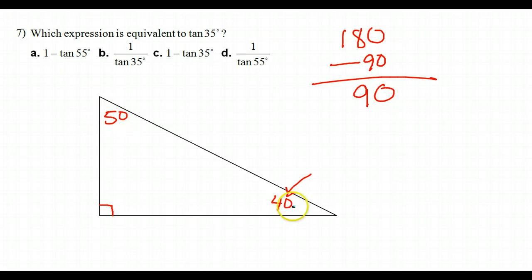So the two acute angles in a right triangle will always add up to 90. So it's a little simpler than having to subtract everything from 180. All I really have to do is subtract from 90.